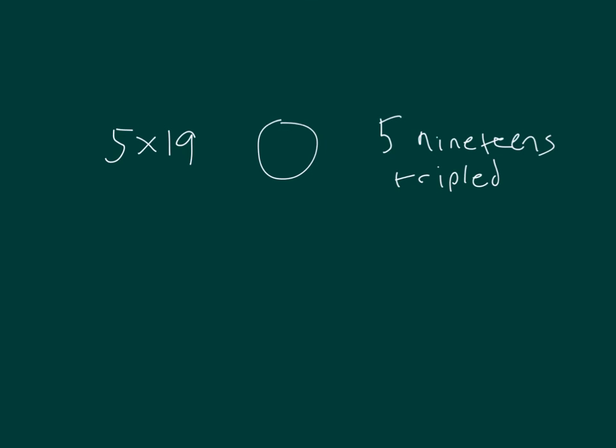Here I have another expression, 5 times 19, which I can work out. On the other side, I have 5 19s tripled, which means 5 times 19 times 3. 5 times 19 is 95, as I saw from over to my left here. And then 95 times 3 is 285.